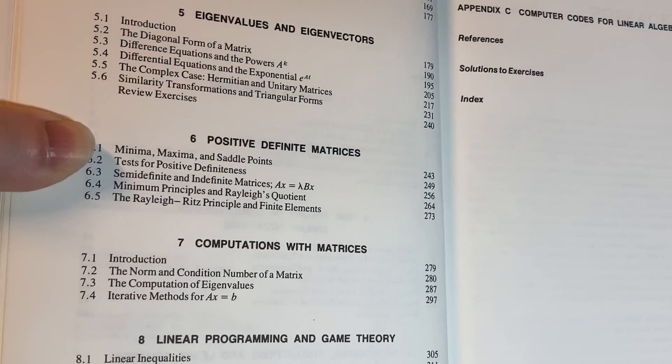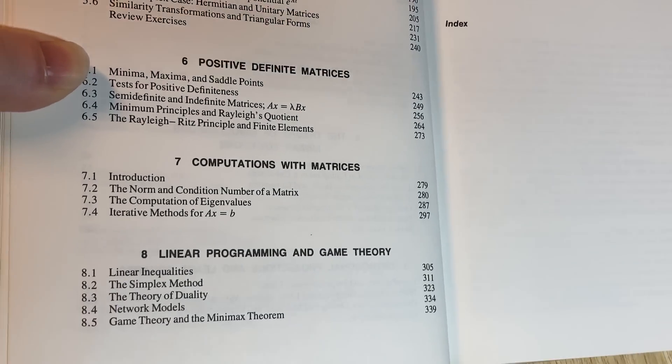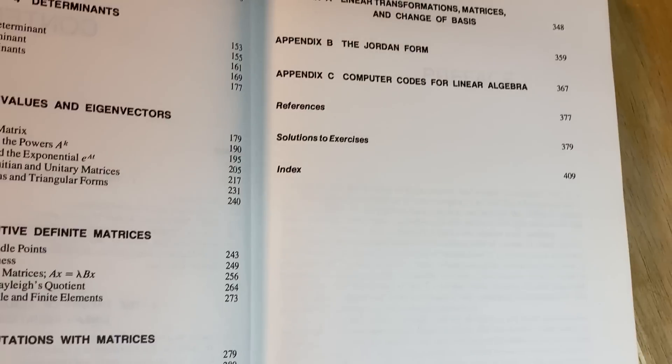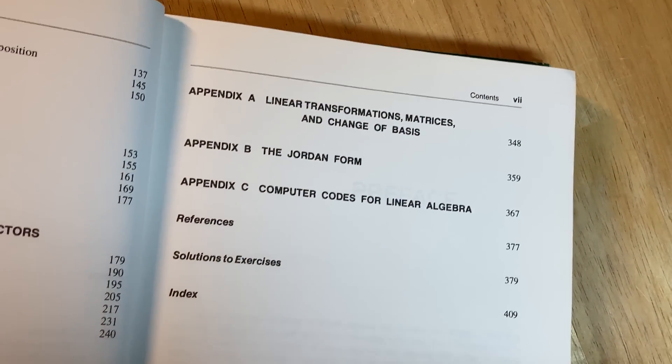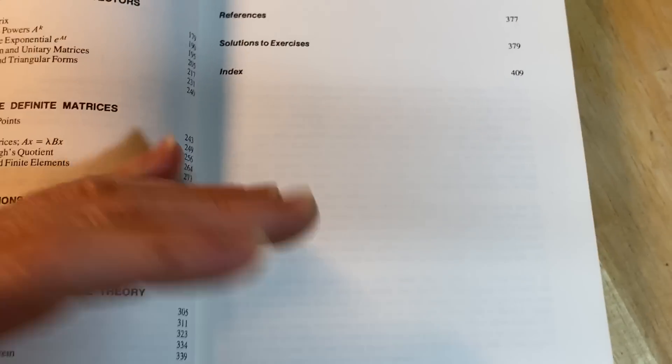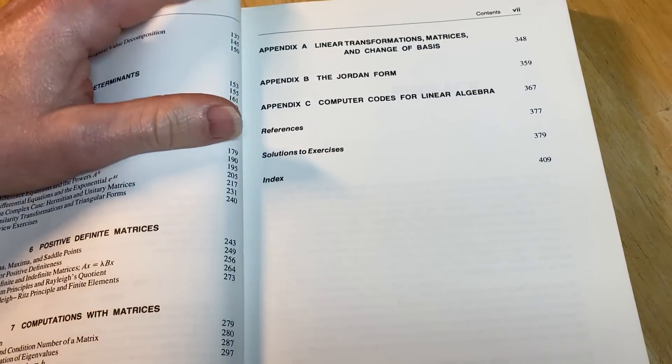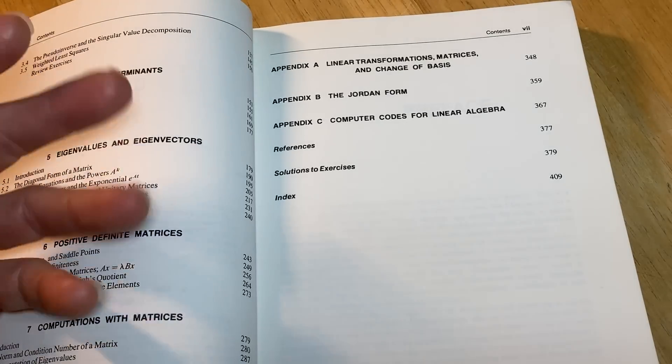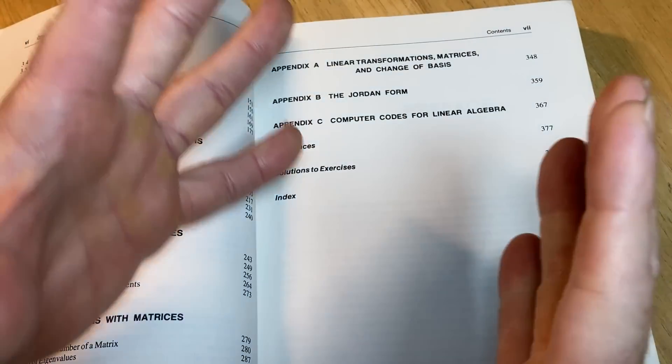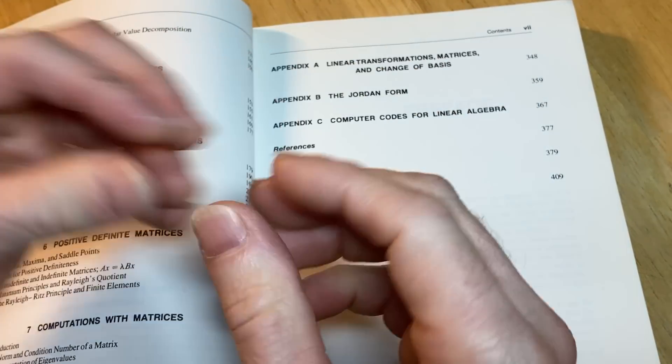I feel like calculus 2 is often used as a requirement for certain math courses that have nothing to do with calculus, but they require it because they want to make sure that people who take the courses have a certain level of what's called mathematical maturity. They've seen some math, they've tried to read math books, they've taken some math classes, they've solved a lot of math problems because the more math you do the better you get at learning new math.